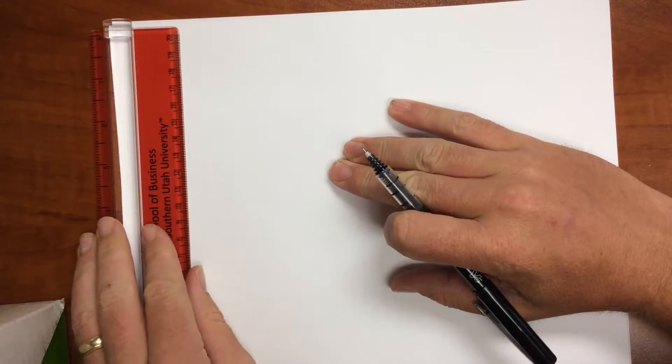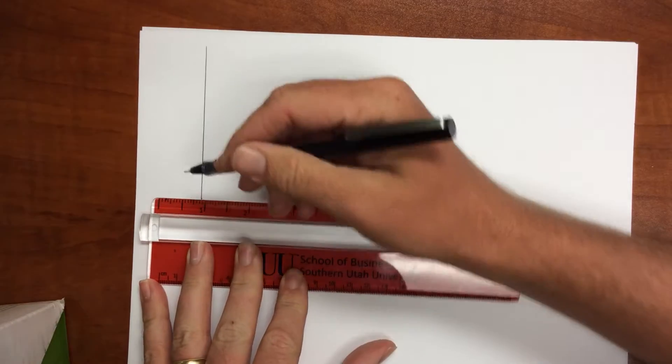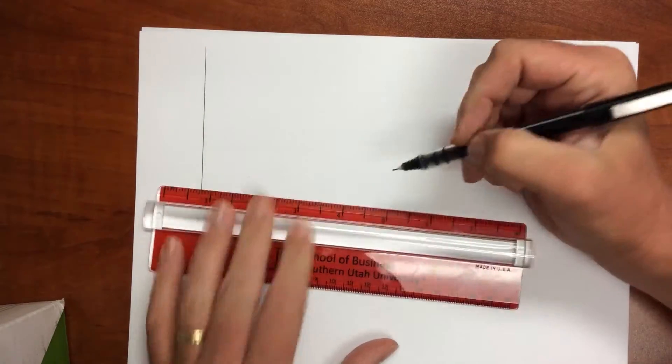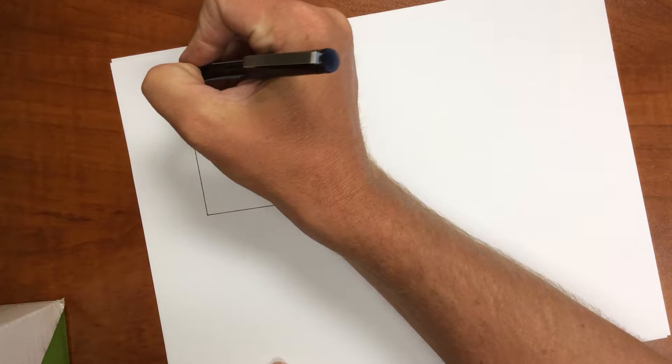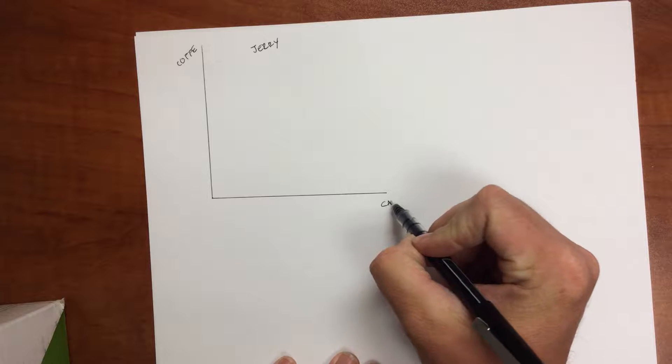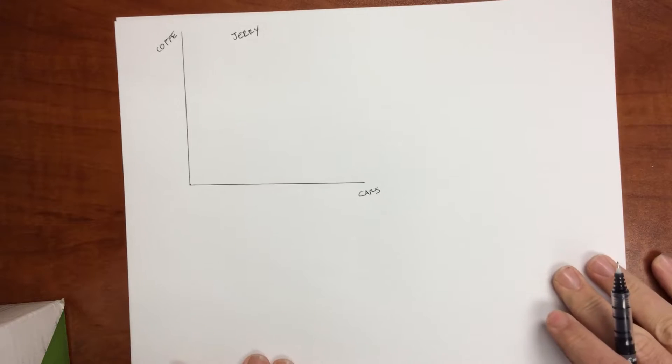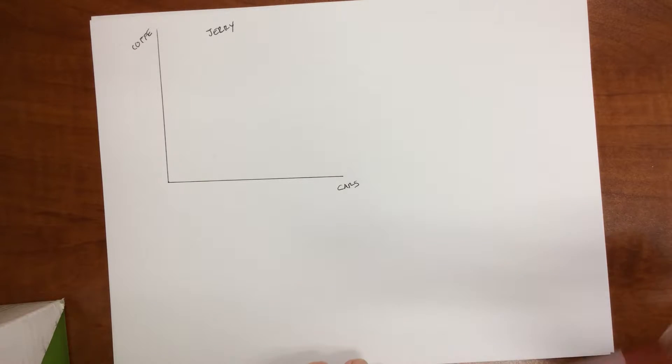So let's first look at Jerry. Jerry is going to produce cars and coffee. So we're going to go to our graph and I'm going to graph out what Jerry looks like. Okay, so not the straightest lines. So here's Jerry. I'm going to put coffee on my y-axis and cars on my x-axis. Those can be switched. The solutions will change slightly in terms of the numbers but not the actual answer of who has comparative advantage.